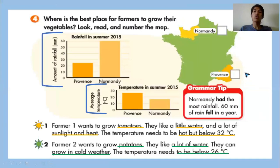With this information, we have to complete number one or number two. For farmer one, it says little water, sunlight, and heat. So farmer one wants to grow in Provence. And of course, farmer number two is going to grow the potatoes in Normandy. As easy as that.